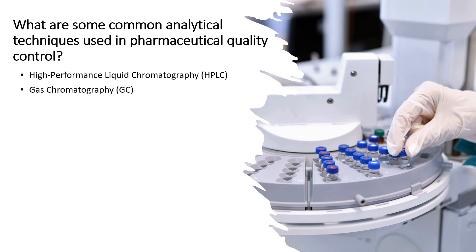The next technique is Gas Chromatography (GC), used to separate and analyze volatile compounds such as residual solvents, volatile impurities and degradation products. It is particularly useful for analyzing small molecules and organic compounds. Next is UV-Visible Spectroscopy, employed to quantify the concentration of compounds that absorb light in the UV or visible range. It is often used for quantitative analysis of APIs, colorimetric assays, purity assessment or identification tests.